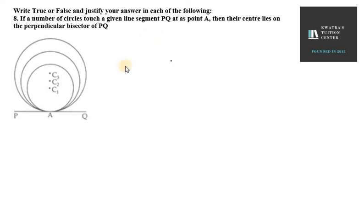Hello everyone, let's start with question number 8. It says if a number of circles touch a given line segment PQ at point A, then their center lies on the perpendicular bisector of PQ.